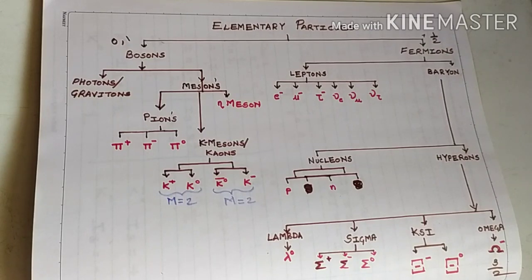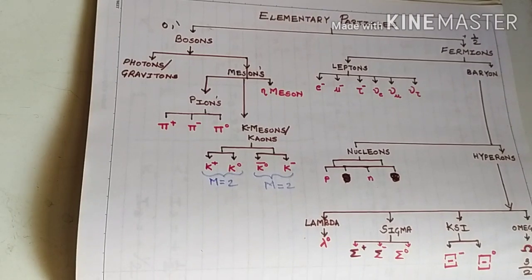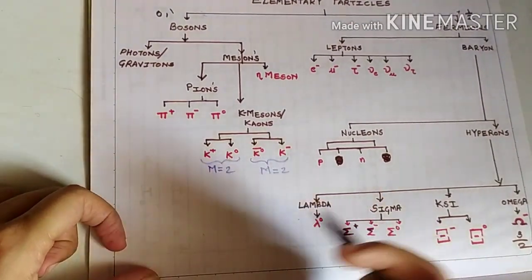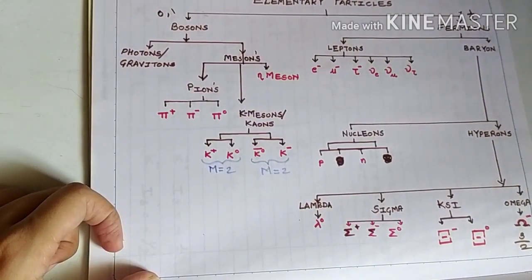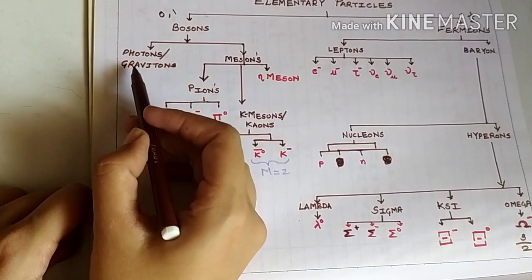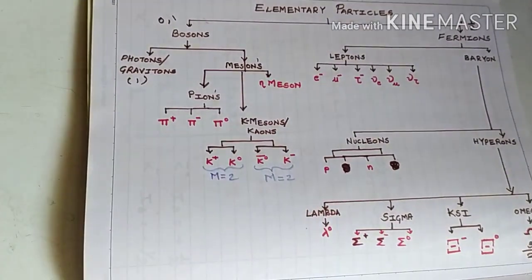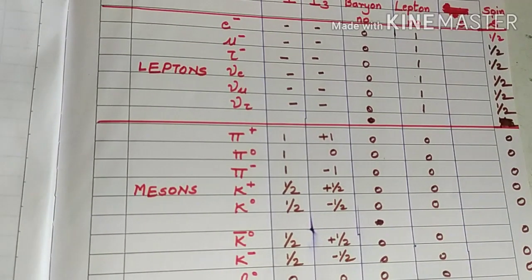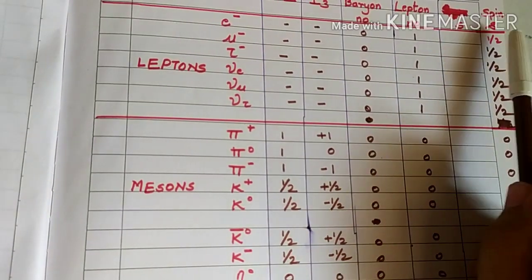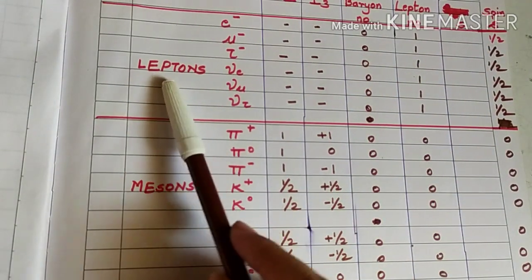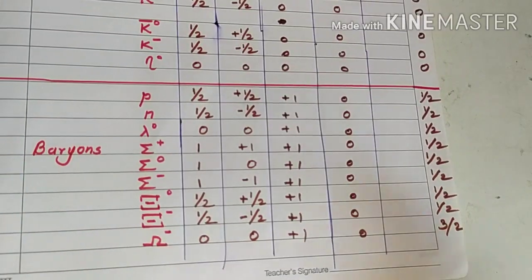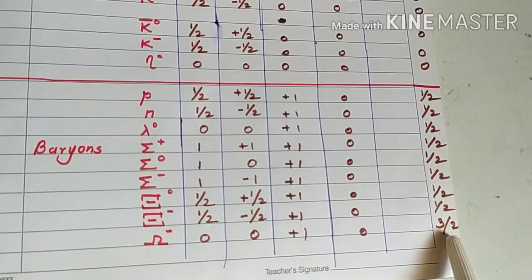Spin for all leptons, all nucleons, and all hyperons happens to be plus half, so spin for all fermions is plus half — except for omega hyperon which has spin three-halves. The reason behind the three-halves spin of omega is the quark model; if you want me to cover that, write in the comments. For bosons, all mesons have zero intrinsic spin, while photons and gravitons have intrinsic spin of one.